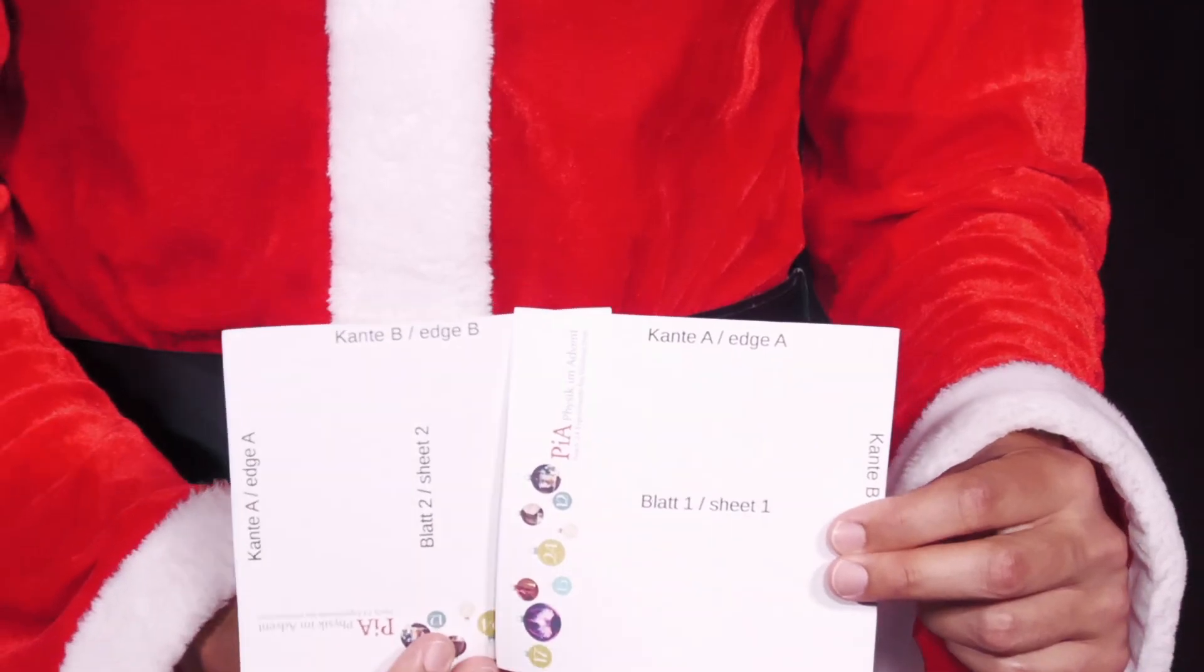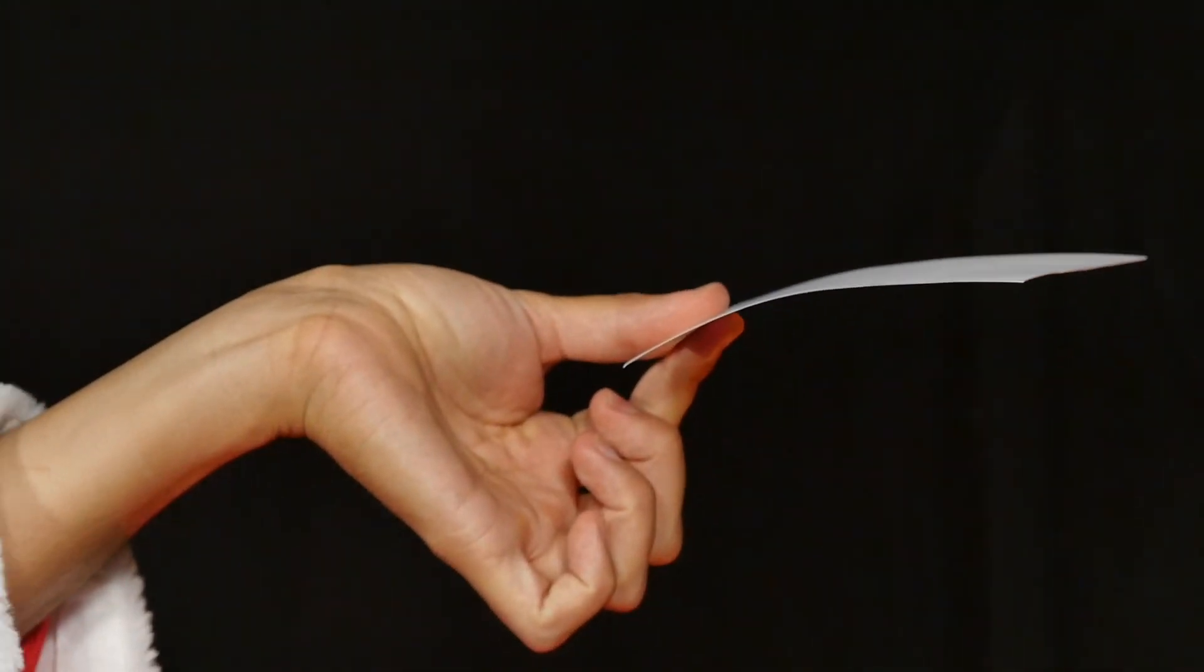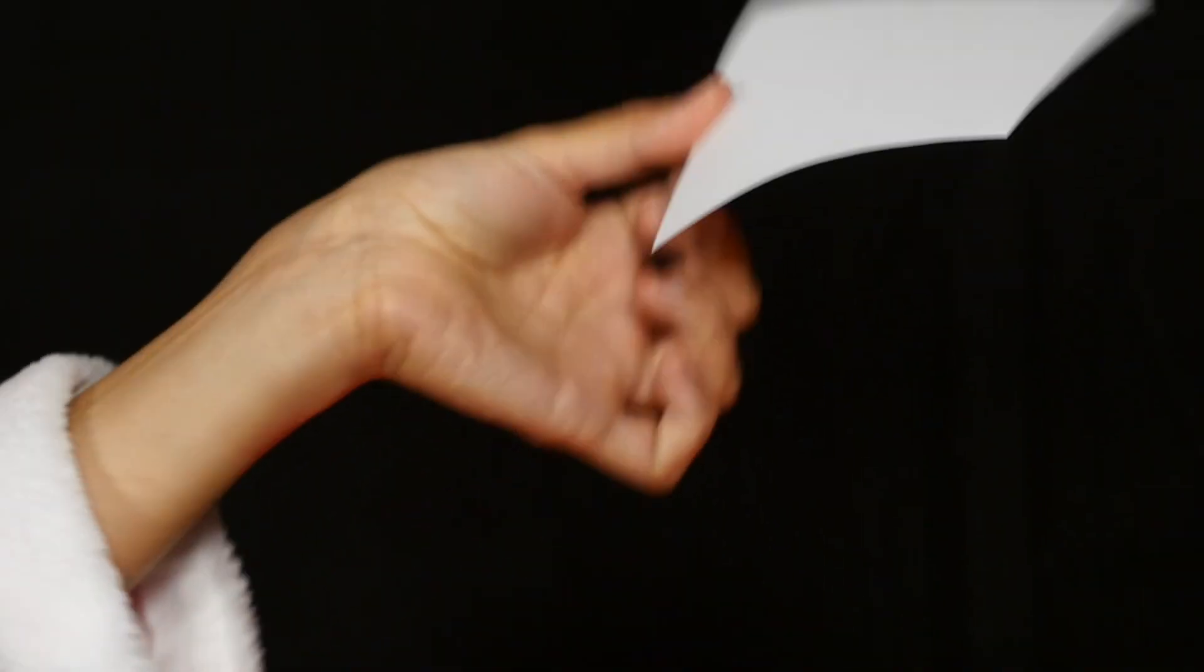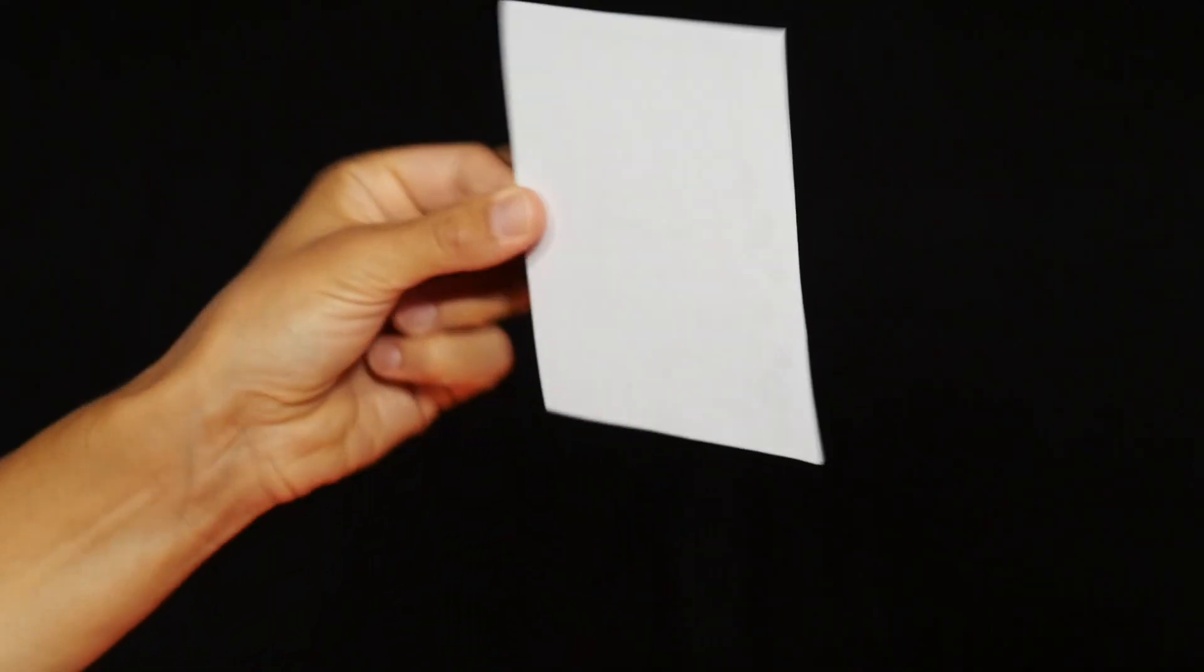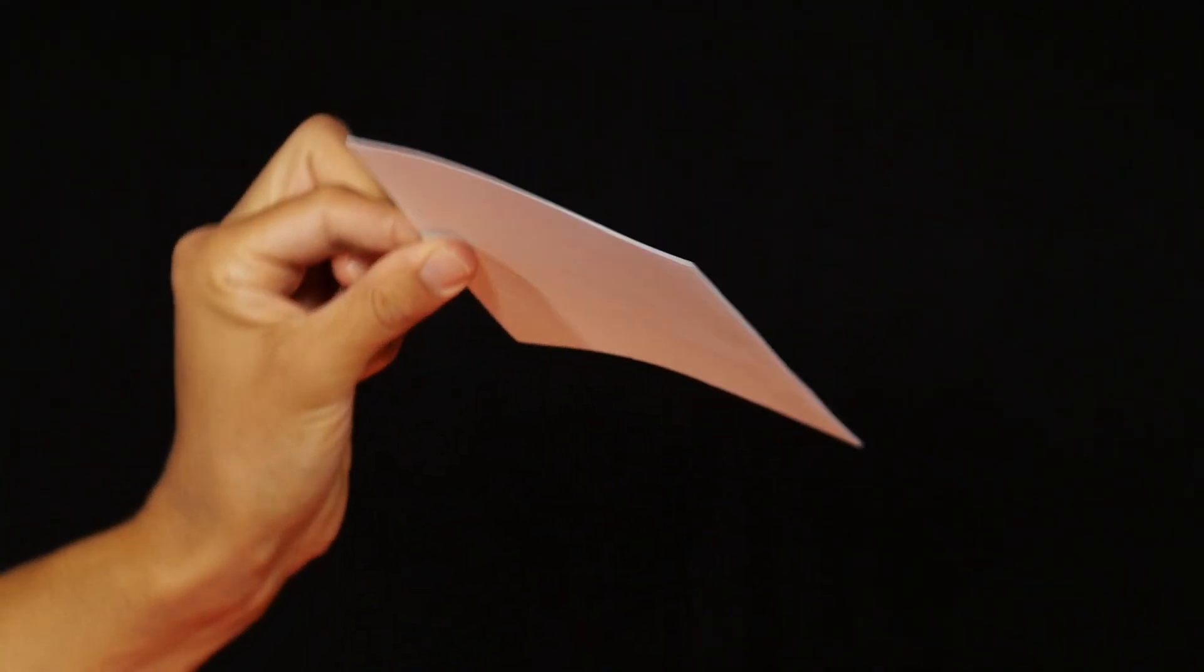She clamps the two sheets between two fingers and, as shown in the film, slowly turns her forearm and hand back and forth so that sometimes sheet 1 and sometimes sheet 2 is on top. What does she observe?